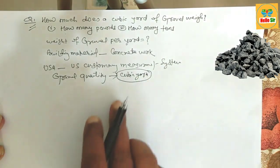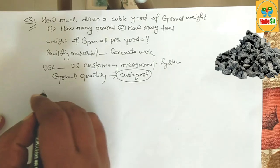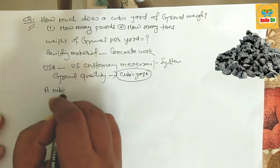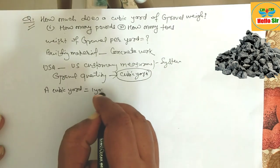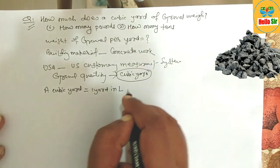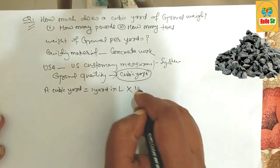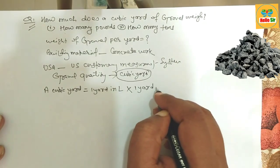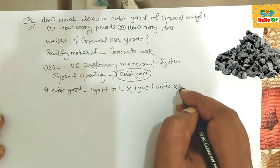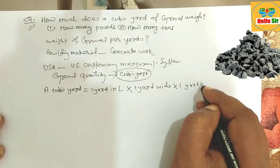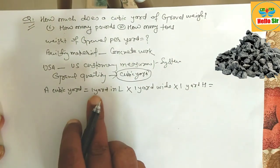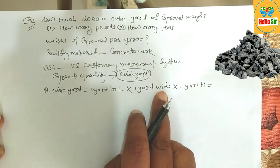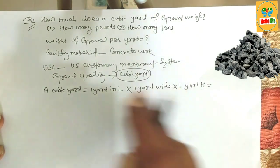A cubic yard is defined as one yard in length multiplied by one yard in width multiplied by one yard in height.